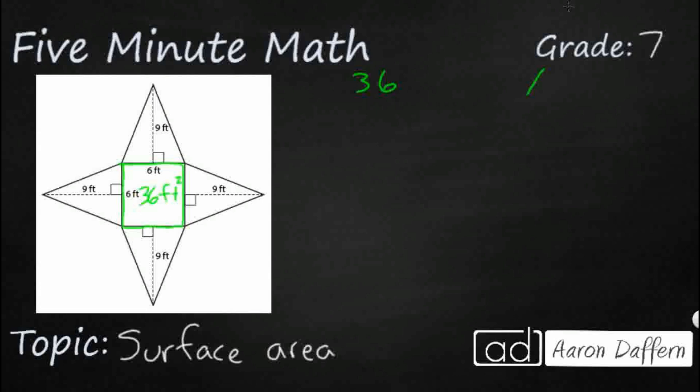Now we need to remember that the area of a triangle is 1 half base times height. All of these triangles are congruent, so let's just find one of them and then multiply that by 4. So the area of a triangle is going to be 1 half. My base is going to be this side of this square, so that's going to be 6, and they give us the height of 9. So let's multiply 1 half times 6 first. 1 half of 6 is 3 times 9, that equals 27.